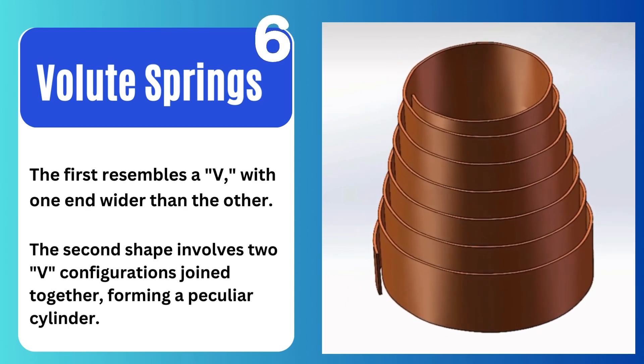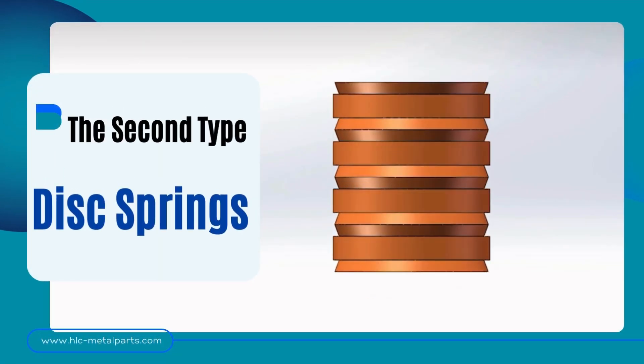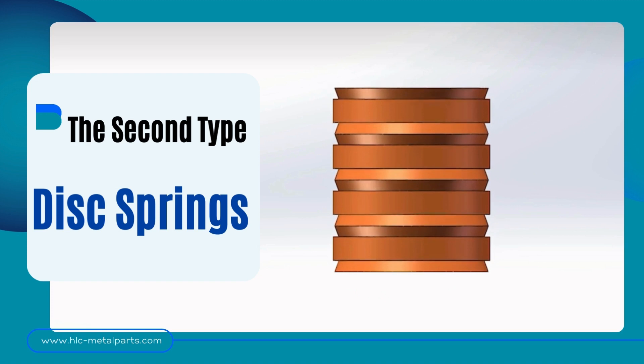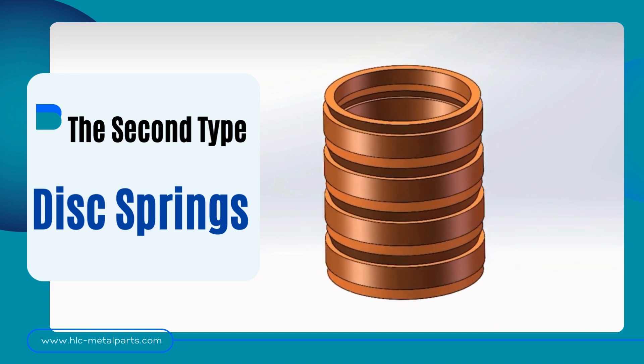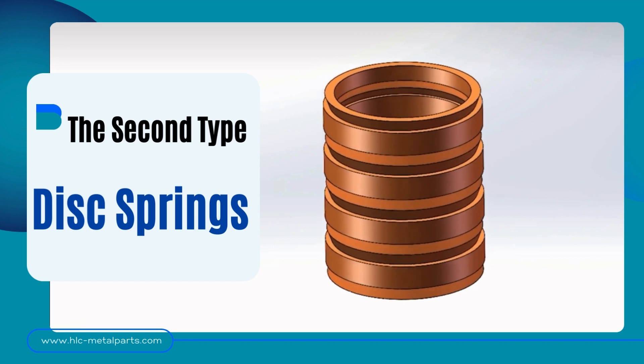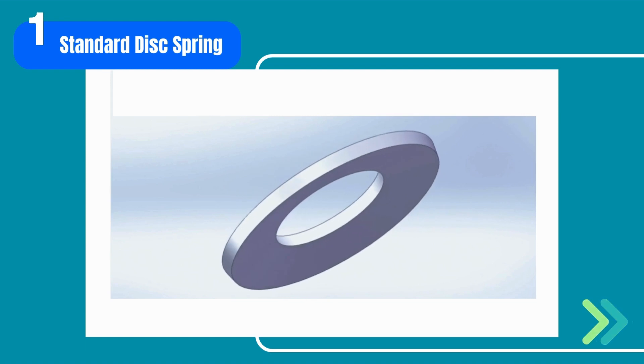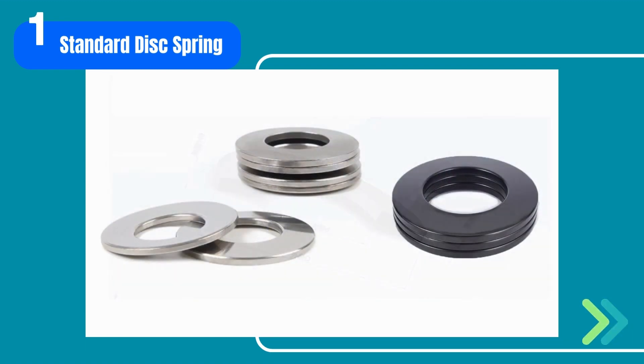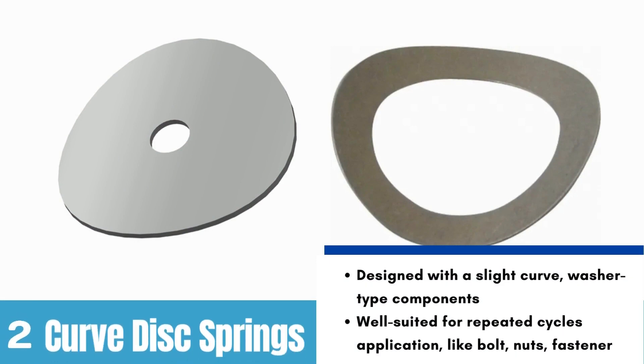The second largest category is the disc spring, also known as Belleville washers. They were named after Julien Belleville, who patented the design in the 19th century. This compact, flat, washer-like spring can exert large compressive forces. Shown in the picture is the standard disc spring, the most common type you'll encounter.